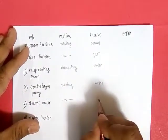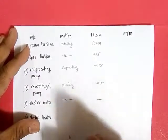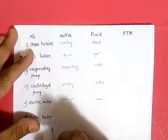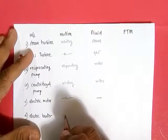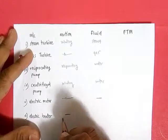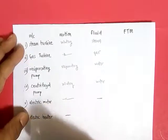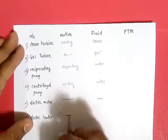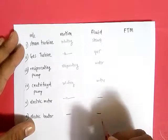Next, the electrical motor: it is a rotating machine, but through the electrical motor there is no fluid flowing, so fluid is absent. Next is the electrical heater: there is no motion — it just converts energy and generates only heat. So there is no motion and there is no fluid.